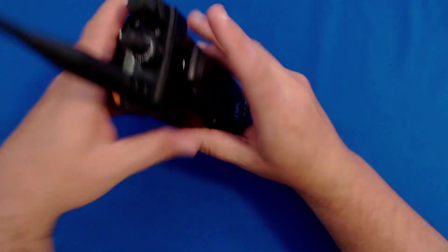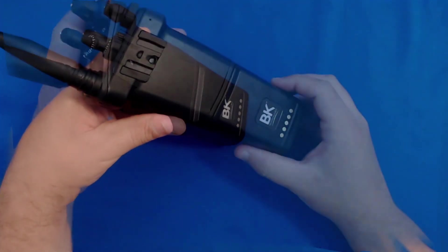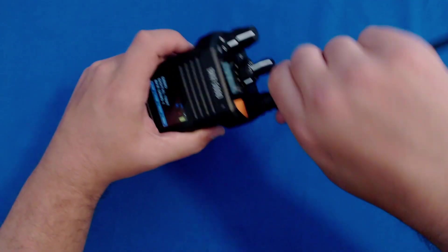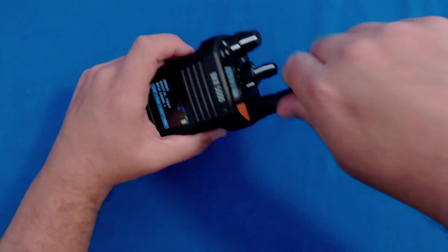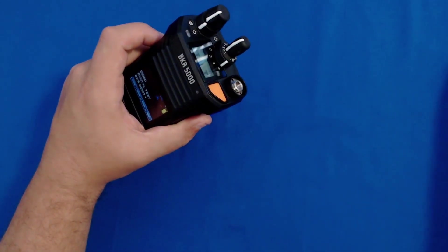Once you hear a click, you can then pull the belt clip off and remove it. To remove the antenna, turn the antenna counterclockwise until it is fully unseated. Do not use tools to do this.